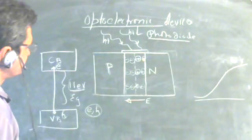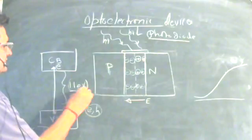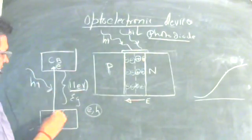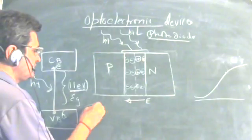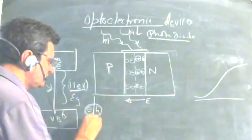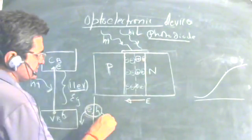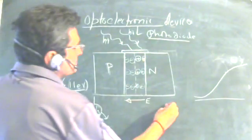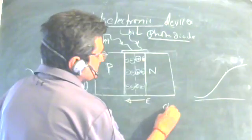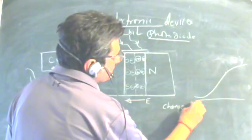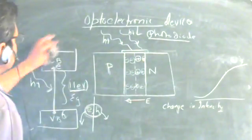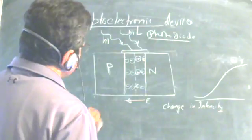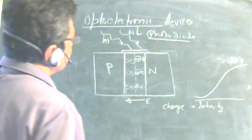In photodiodes, you need an energy gap such that the photon's energy is able to excite the electron into the conduction band and generate electron-hole pairs. You also need a mechanism by which the pairs do not recombine — we want their separation. We want to measure the change in intensity of light, so we need the electron-hole pairs to separate and give a current.